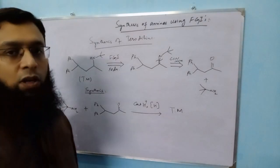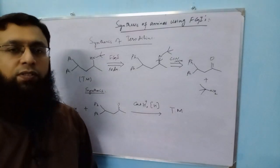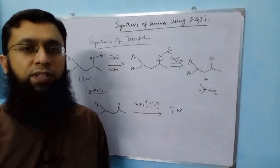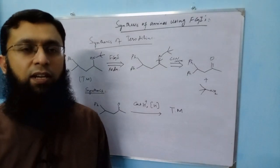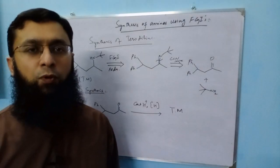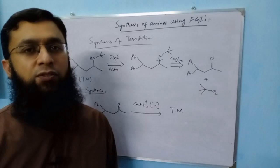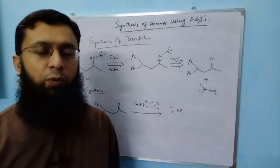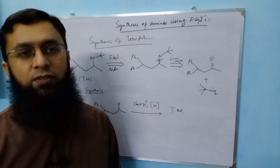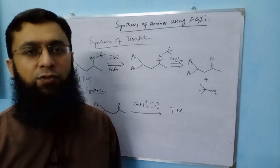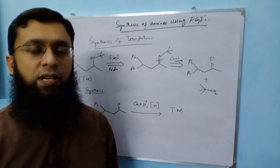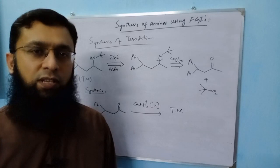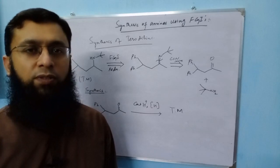So this was all about the synthesis of amines using functional group interconversion. We saw the problem posed by amines during their synthesis, and we proposed two alternative routes: amide reduction and reductive amination. If you have any question or query, please leave them in the comment box. Thanks.